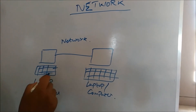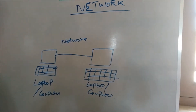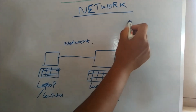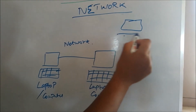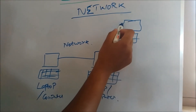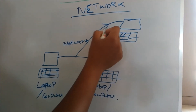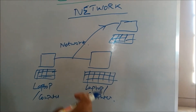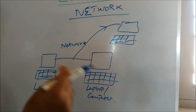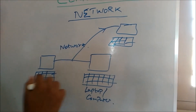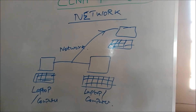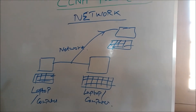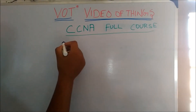Basically, two or more devices connected together. There are two devices here — for example, this is the computer. We connect this. This is two or more devices connected to the internet, connected to the server. You can expand the network.